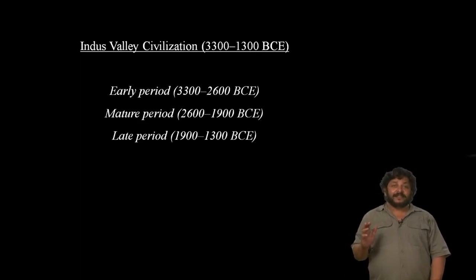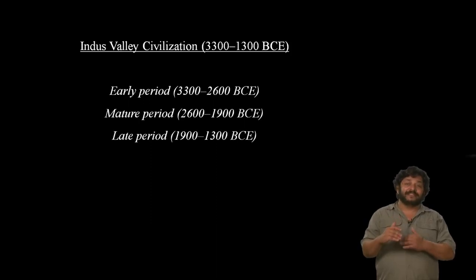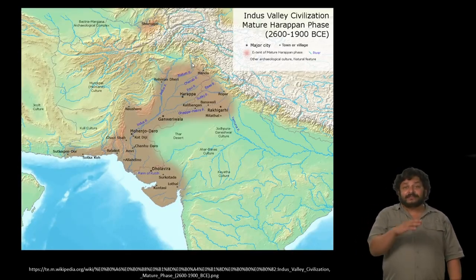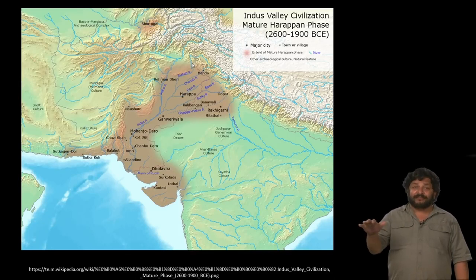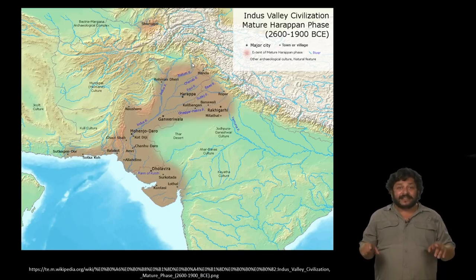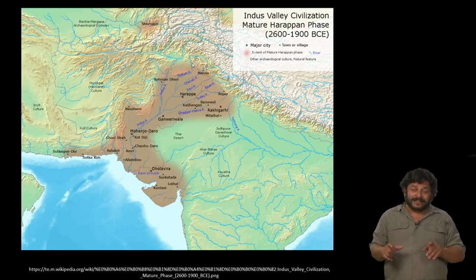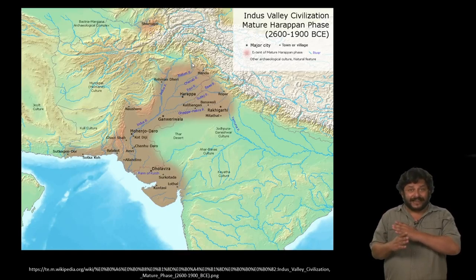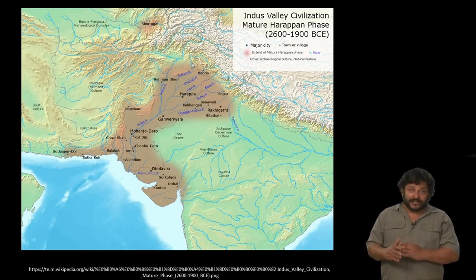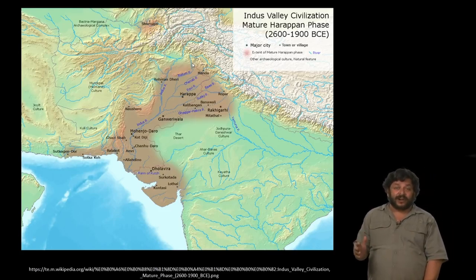The Indus Valley civilization is divided into three phases: early, mature, and late. It is characterized by a uniformity of measures and standards found across a very large area. They construct big urban centers in bricks; the bricks are of uniform measurements. Most of the layouts are grid-iron, meaning streets are laid at right angles to each other, and there are very sophisticated systems of drainage and sewage in all the cities of the Indus.